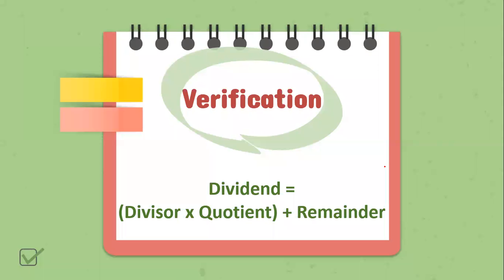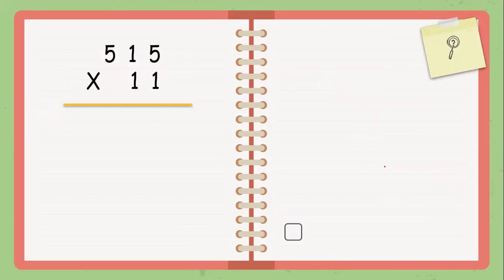Now we have to verify. To verify, we multiply the divisor by the quotient and then we add the remainder. And we must get the dividend. Let's try. The quotient is 515 and the divisor is 11.